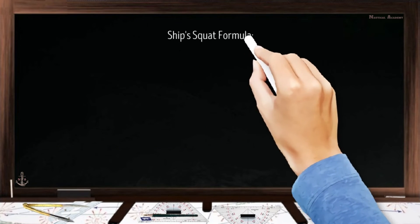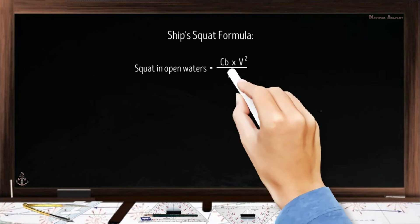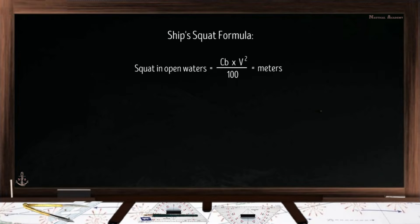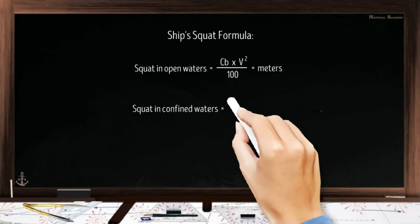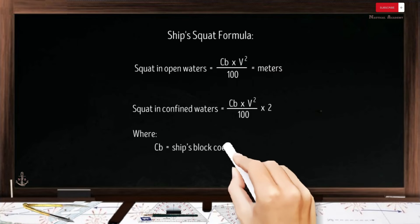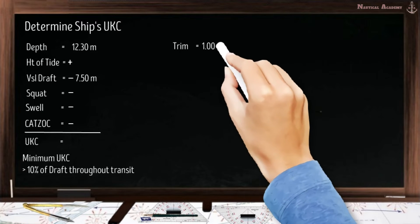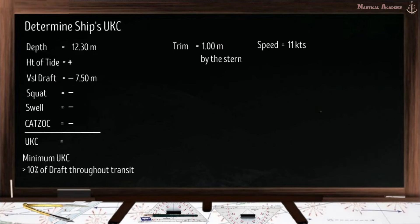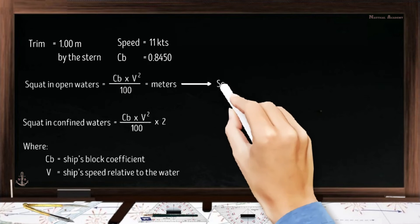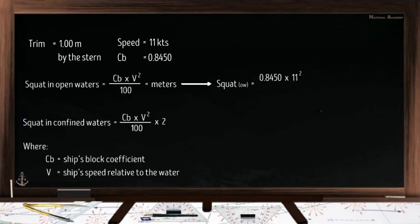The formula to calculate the ship's squat is: squat in open waters = CB × V² ÷ 100, where CB is the block coefficient and V is the ship's speed relative to the water, and the answer is in meters. Let us assume the ship's trim is 1.00 meter by the stern, her speed is 11 knots, and her block coefficient at a given draft is 0.8450. For squat in open waters: 0.8450 × 11² ÷ 100 = 1.02 meters.